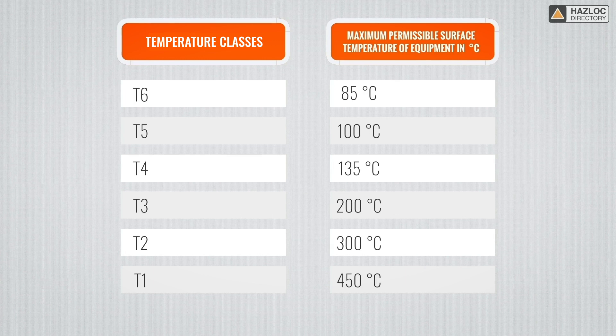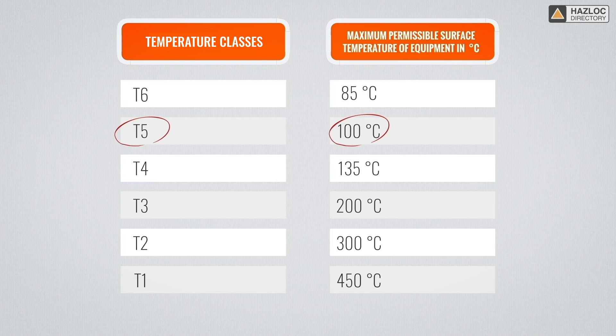What this table means is that a device classified as T5 will never attain a surface temperature higher than 100 degrees Celsius which can be exposed to explosive atmospheres and cause an explosion.